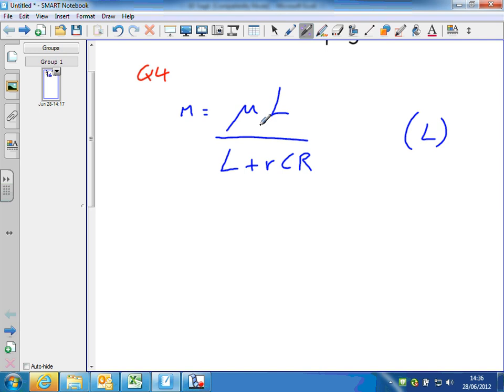So again, we have a situation where L appears more than once, so factorising is going to come into it somewhere. But the first job is, I would suggest, get rid of the L plus r C R underneath by multiplying both sides by that whole term, and then go from there.